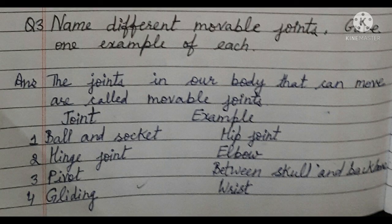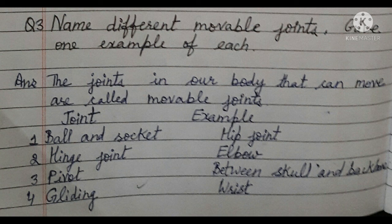Question 3. Name different movable joints and give one example of each. The joints in our body that can move are called movable joints. Their names are as follows: First, ball and socket joint — example: hip joint. Second, hinge joint — example: elbow. Third, pivot joint — present between the skull and backbone. Fourth, gliding joint — present in the wrist.